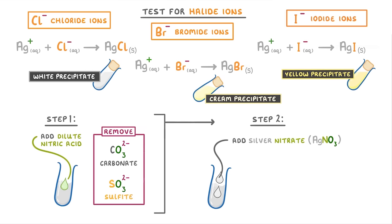So by doing this test, which we sometimes call the silver nitrate test, and seeing which color the solution turns, we can see which of our halide ions must have been present.